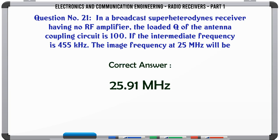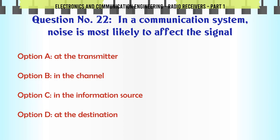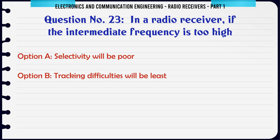The correct answer is 25.91 MHz. In a communication system, noise is most likely to affect the signal: A. At the transmitter. B. In the channel. C. In the information source. D. At the destination. The correct answer is in the channel.